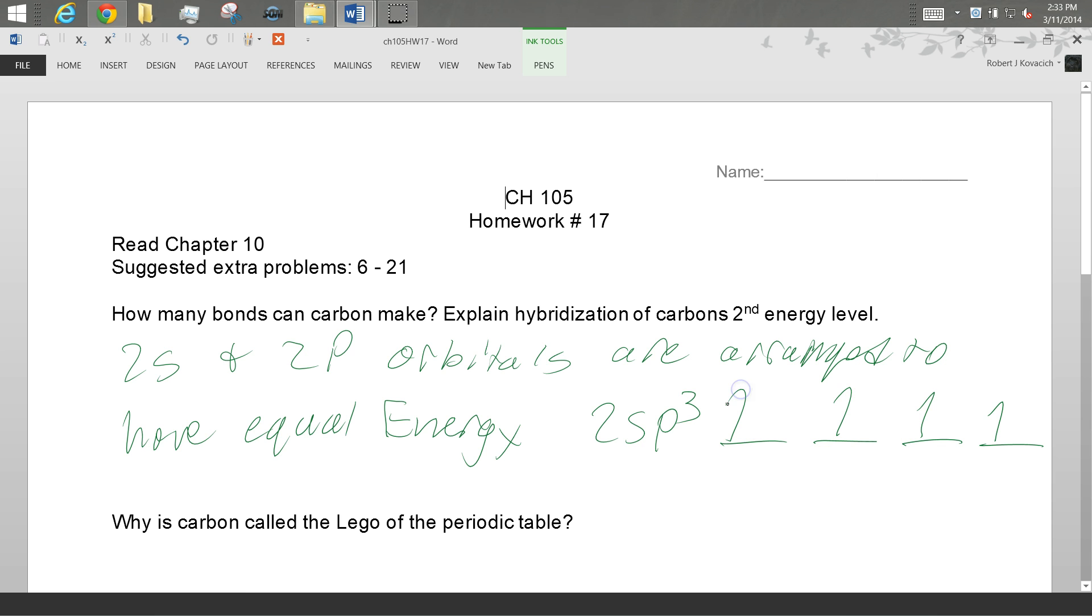So instead of having the three orbitals in the third energy level, in the 2p above the one orbital and the 2s, they hybridize, meaning they put them all on the same level, giving them the same amount of energy, and then the four electrons are distributed via Hund's rule across all four orbitals. And so now the carbon can make four bonds.